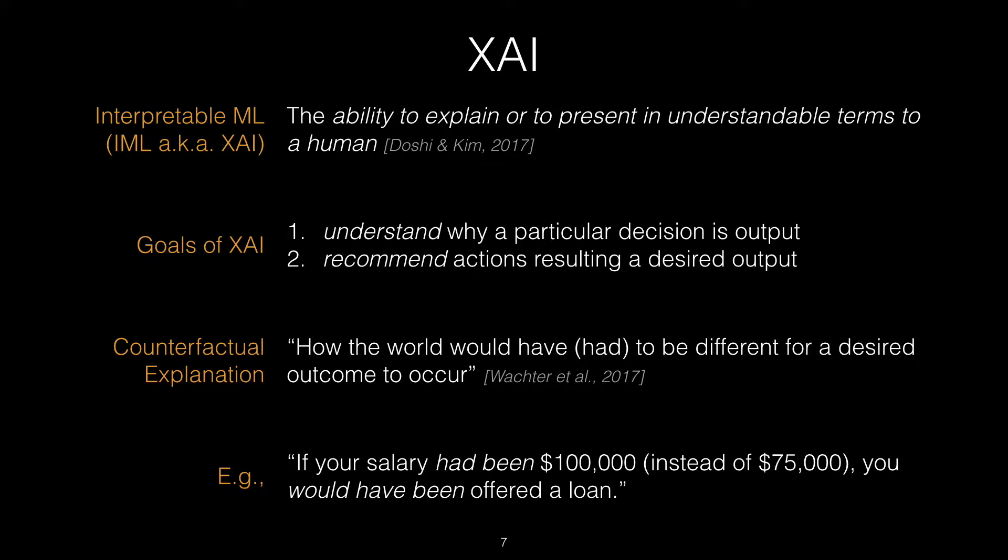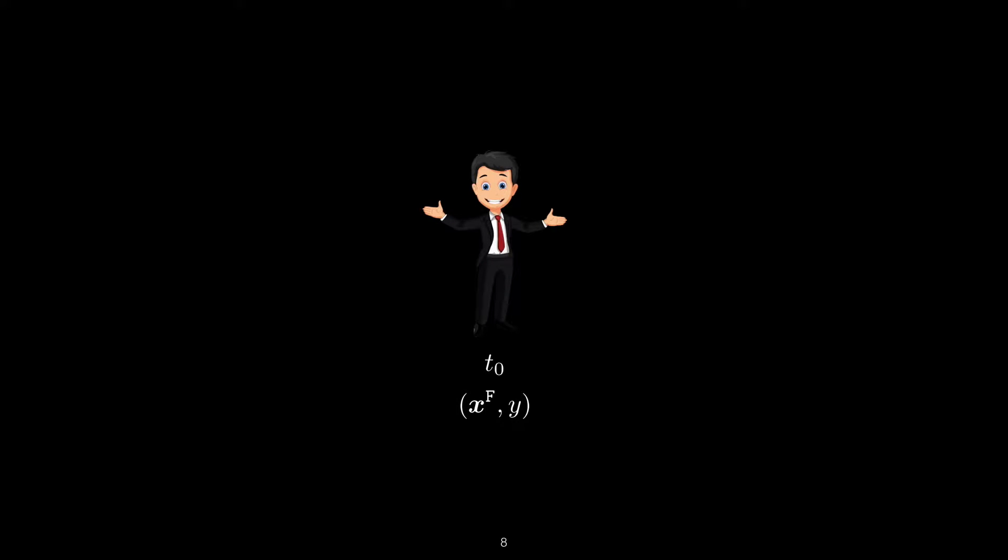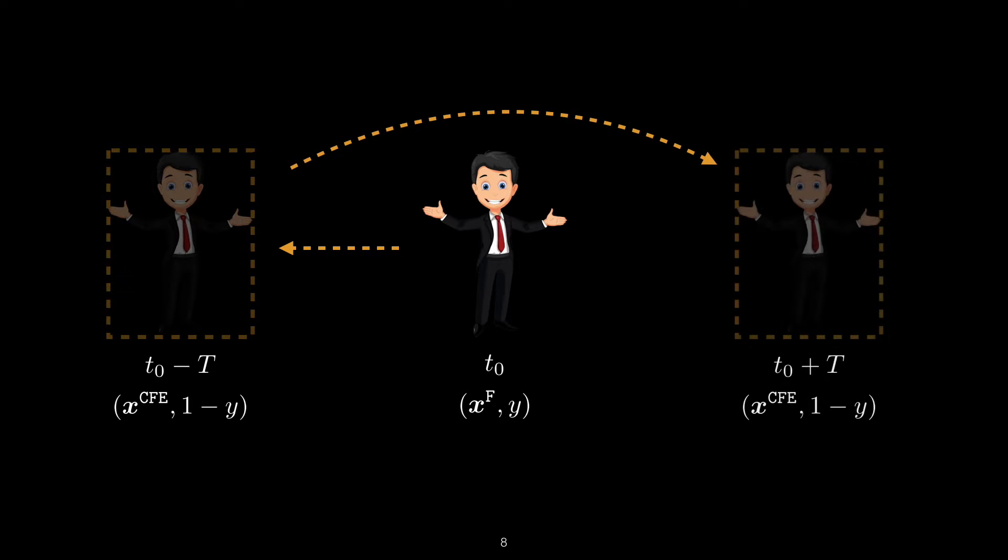Let's take a closer look at counterfactual explanations and see whether or not they satisfy the goals of XAI. Given Edward, a factual instance x^F with prediction y at time t_0, we seek an explanation for why his loan was rejected. Looking back in time, a counterfactual explanation would tell us that had the feature vector x^F taken values of x^CFE, the classifier h_θ would have given you the loan. This is called retrodiction. Now, using the same reasoning and looking forward in time, if the world is stationary and the classifier doesn't change, at time t_0 + t the feature vector x^CFE would also result in a favorable outcome. This is called prediction.